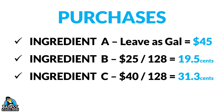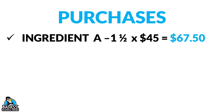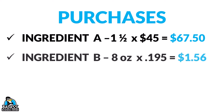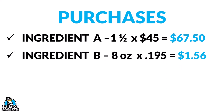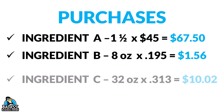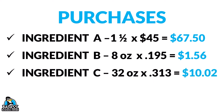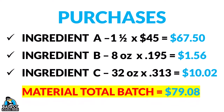Now we take these numbers and plug them in to figure out our cost of goods. Ingredient A: we use one and a half gallons, so one and a half times $45 a gallon tells us it's $67.50. Ingredient B: eight ounces times 19.5 cents gives us $1.56. Ingredient C: 32 ounces at 31.3 cents gives us $10.02. Our total materials for this batch come to $79.08.